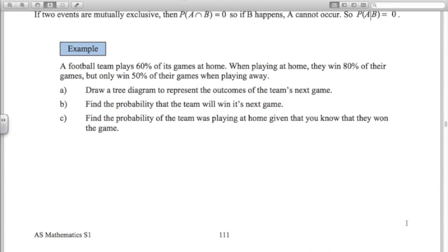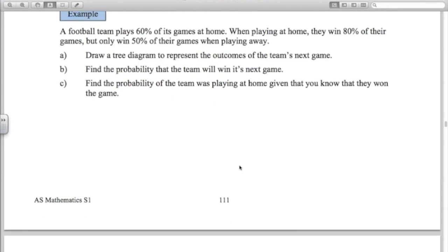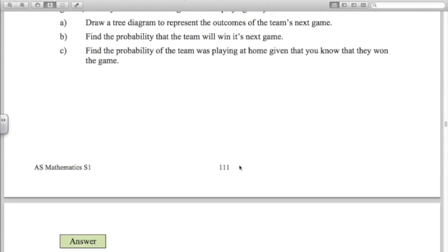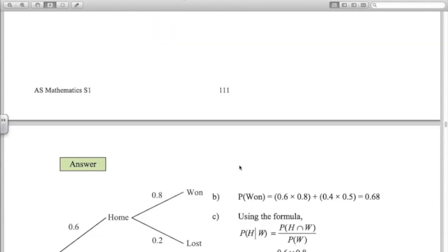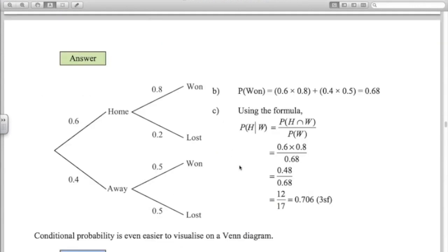Let's look at the same example we did before in our previous video on tree diagrams about the football team playing at home, winning 80% of their games at home, but only 50% of their games away. Part C is the conditional probability question. Find the probability of the team that's playing at home given that you know that they've won the game. So if you read the newspaper, they've won the game, what's the probability now that we have that information that they're at home?